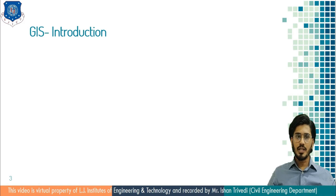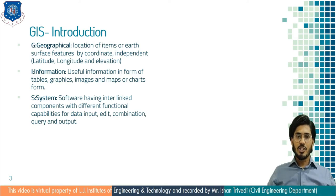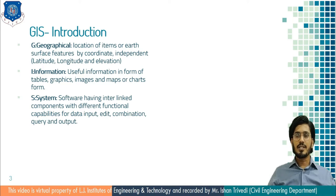The question is: what is GIS and how is this tool useful in town planning? GIS is comprised of three terms — geographical information system. G stands for geographical, which is the physical feature located on earth's surface by coordinates such as latitude, longitude and elevation. I stands for information, which is useful in the form of tables, graphics, images, maps or charts.